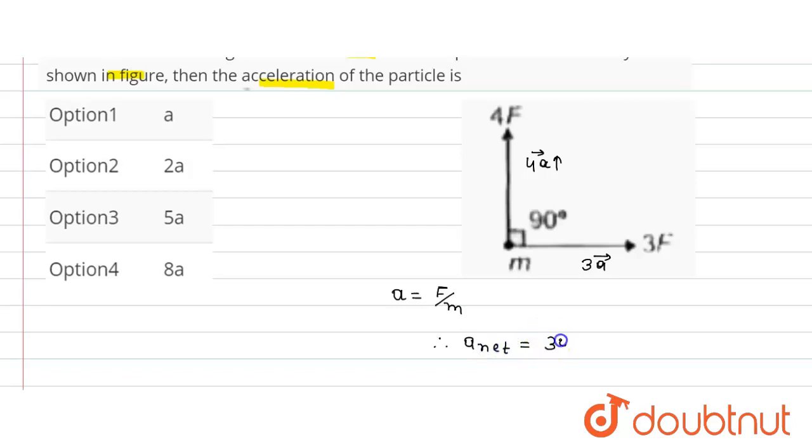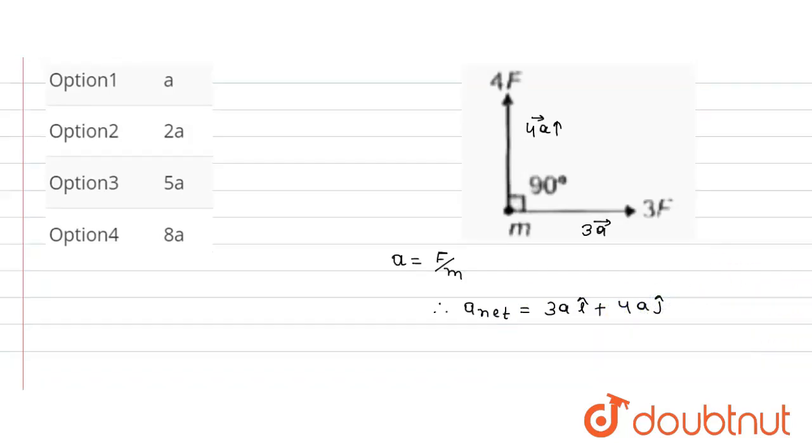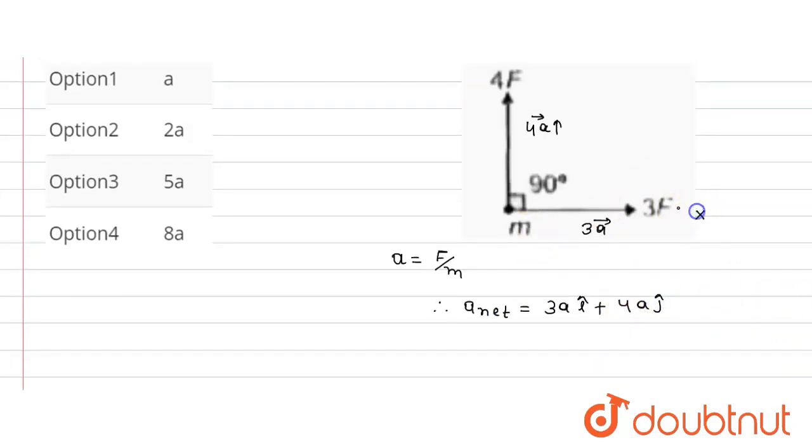This will be 3a i cap plus this will be 4a j cap, okay, j cap. Unit vector along this x axis, unit vector along y axis.